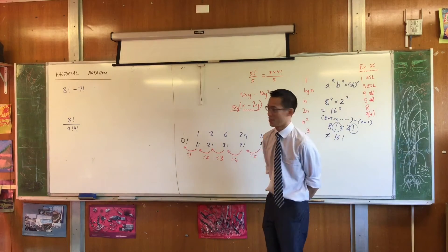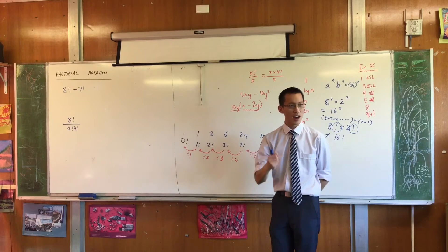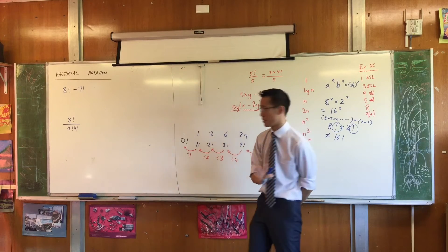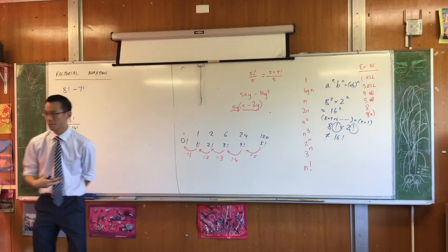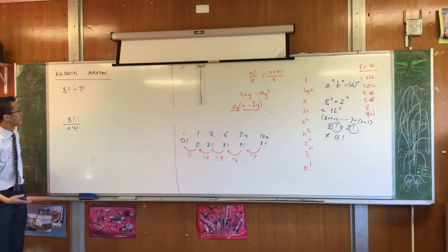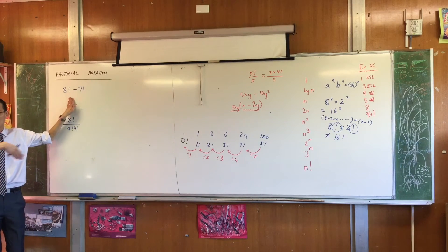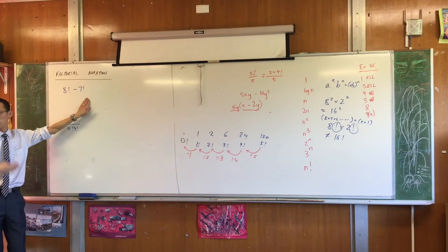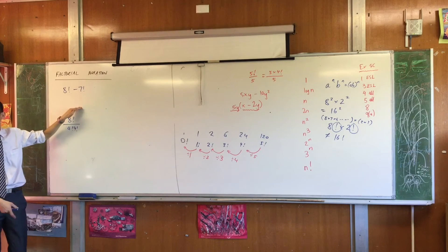Each of these questions requires you to understand factorization and canceling in a particular way. So have a look at this top one. Clearly I could work this out by doing 8 factorial, whatever that happens to be, then do 7 factorial, whatever that happens to be, and then calculate it.